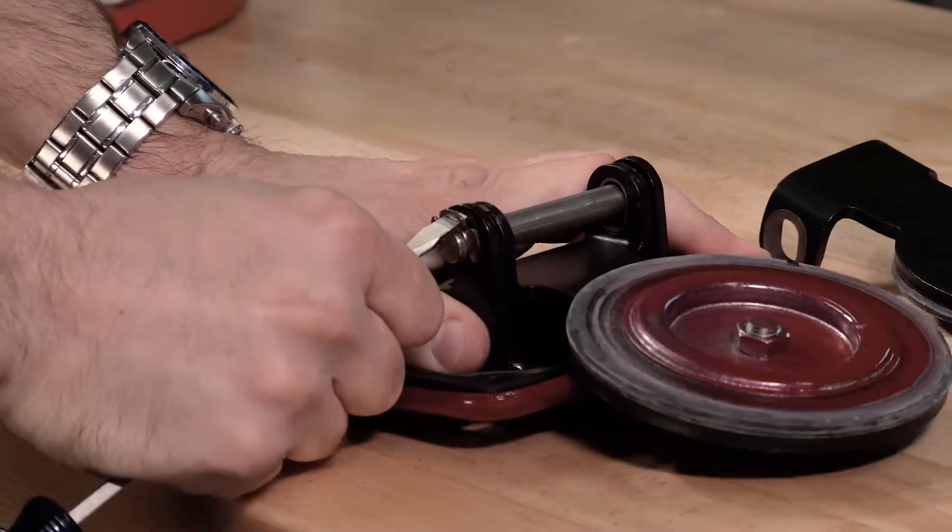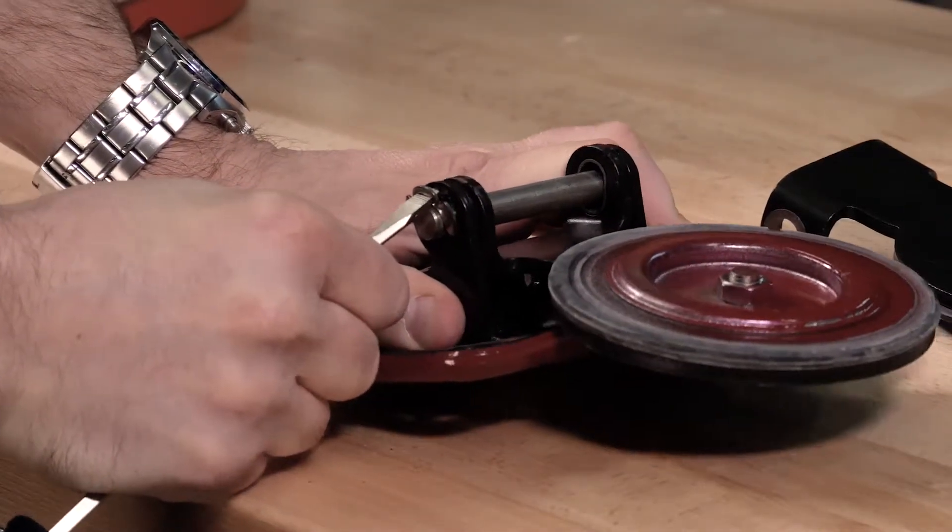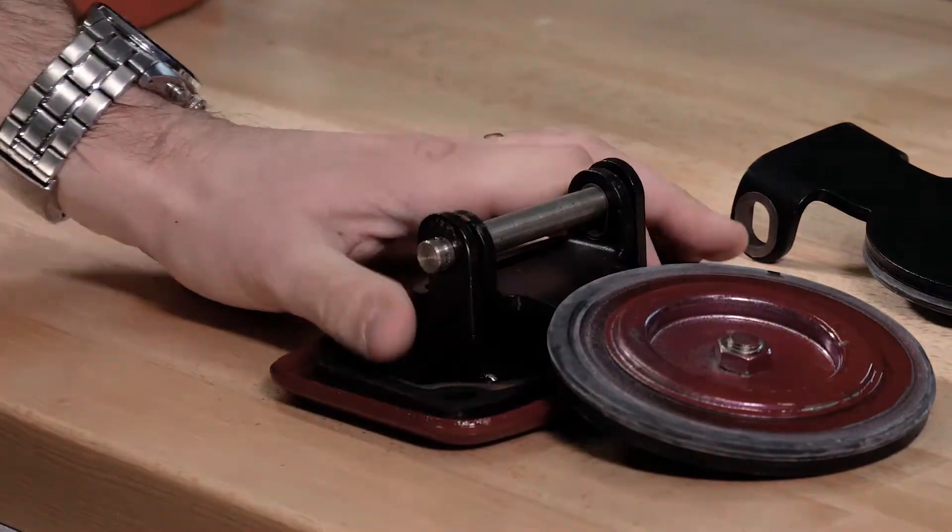We will first need to remove one of the retaining rings in order to remove the clapper hinge pin from the cover.